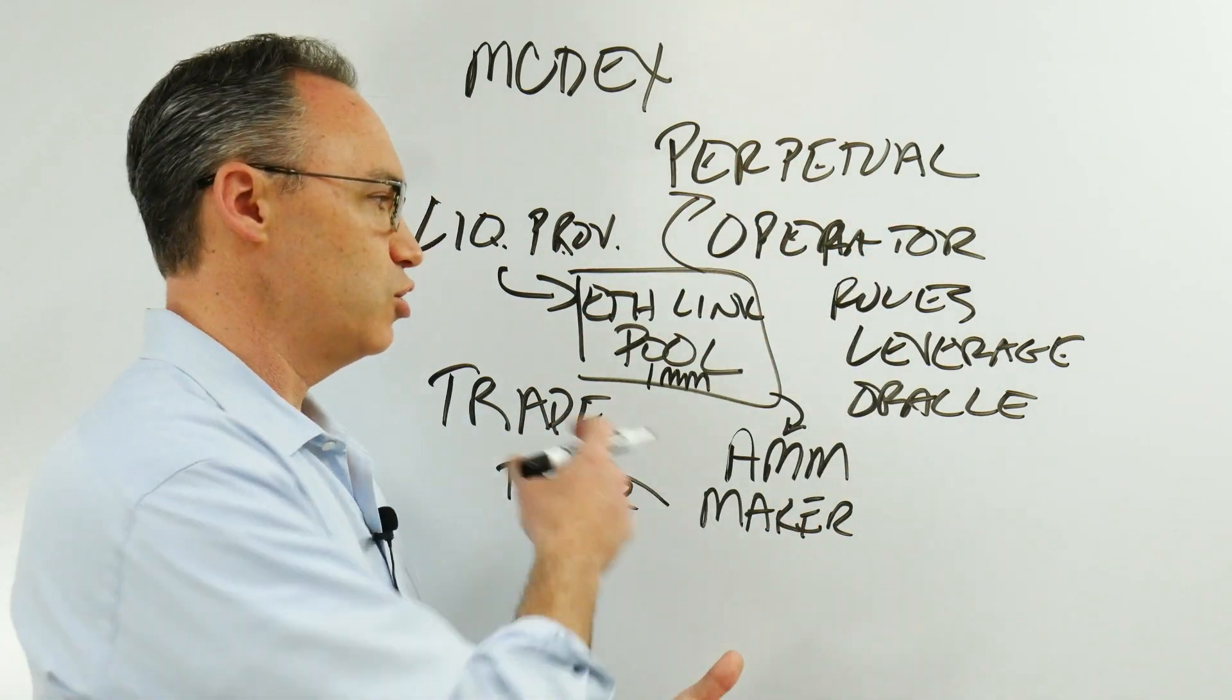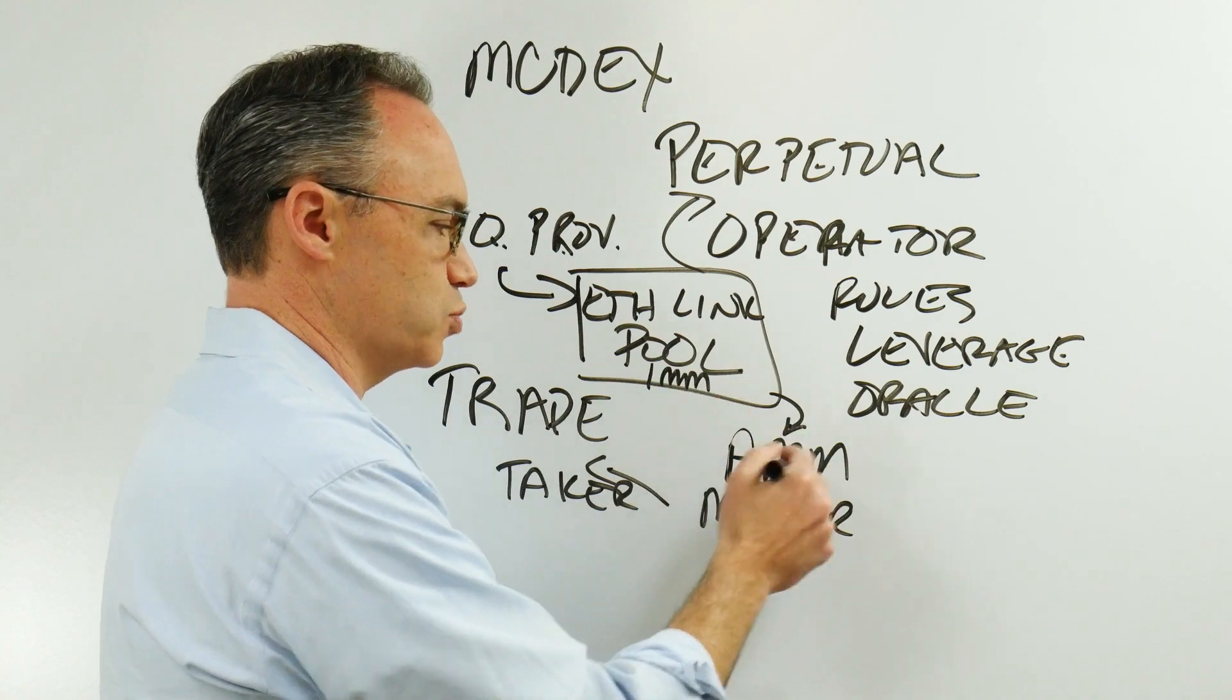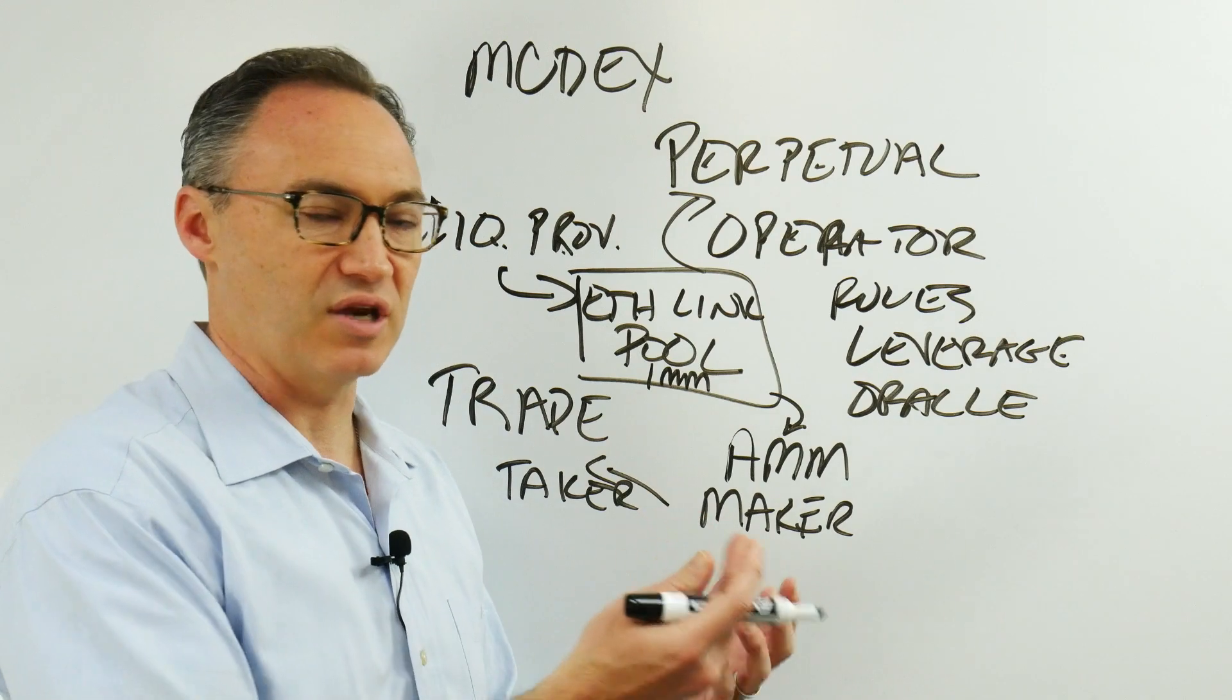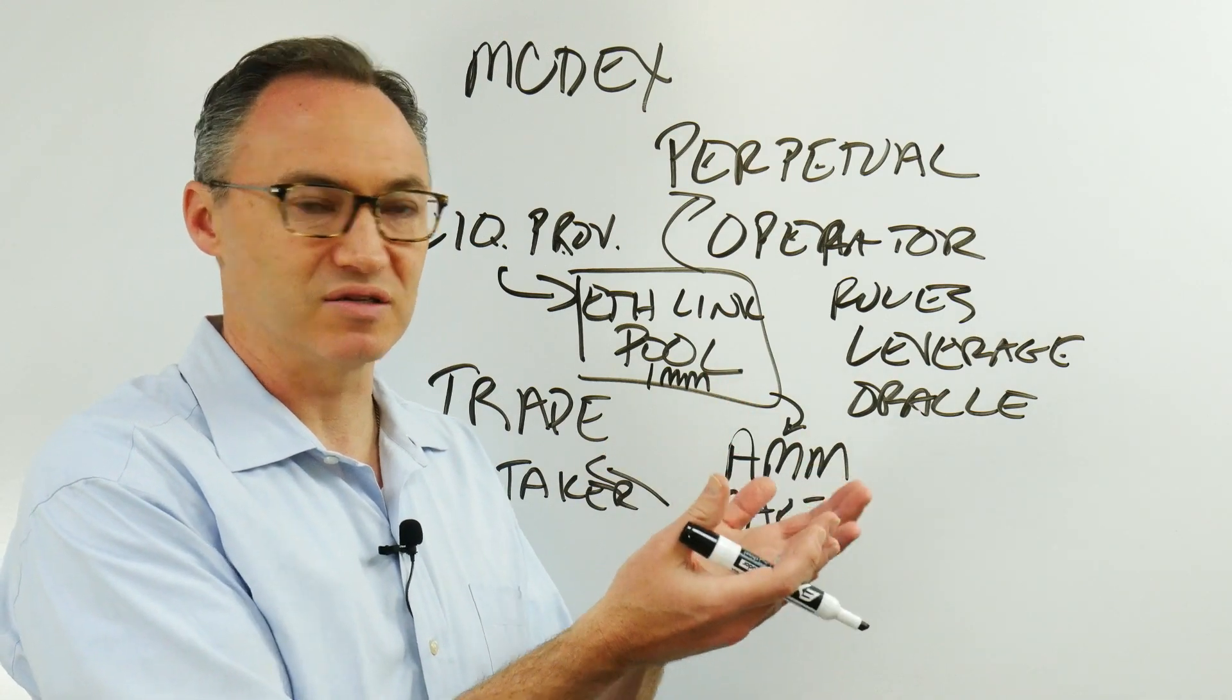The brilliance here is you have liquidity providers that can provide this pool for the AMM. The AMM can always be the maker of the market because it's just an algorithm watching the market.